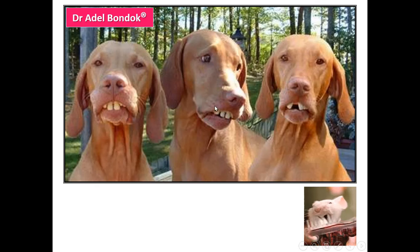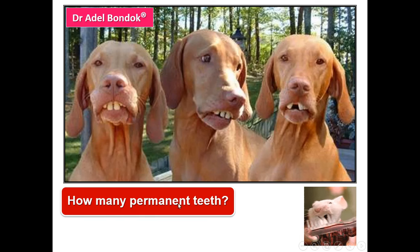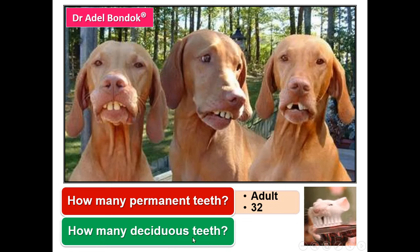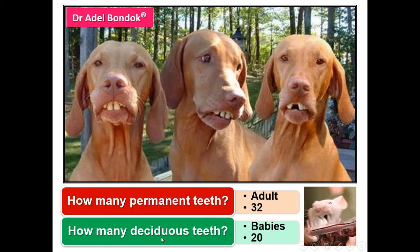Regarding the teeth, how many permanent teeth? The permanent teeth are 32, present in the adult — 16 in the upper jaw and 16 in the lower jaw, 8 on each side. How many deciduous teeth? Deciduous teeth in babies are 20 — 10 in the upper jaw and 10 in the lower jaw, 5 on each side.